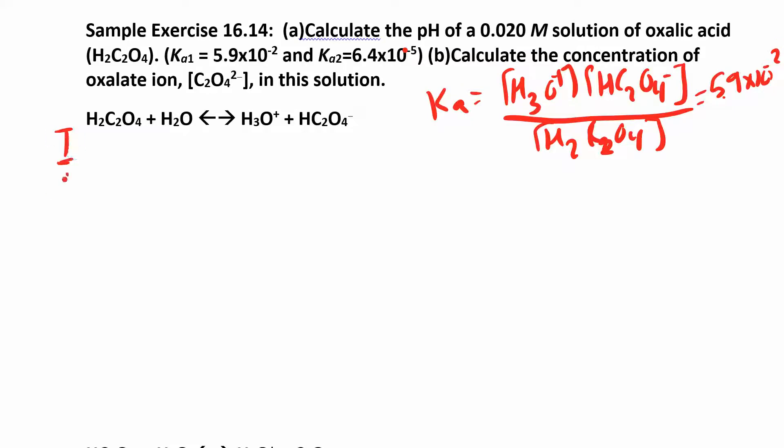We'll run through the quadratic really quickly here. We have 0.020 as our initial. We don't have any of this, so we set up the rest of our ICE table the way we usually do. We know 0.020 minus x, x and x.